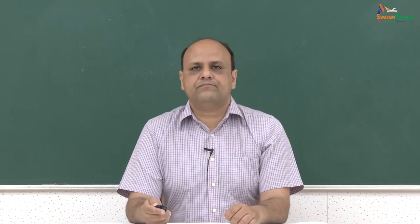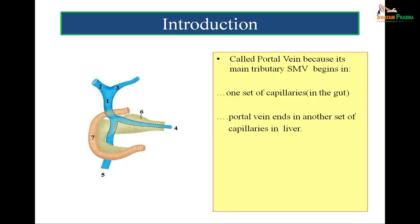Why is this portal vein called portal vein? It is called portal vein because the superior mesenteric vein which forms it begins in one set of capillaries in the abdomen, and the portal vein once formed ends in another set of capillaries in the liver. Such an arrangement wherein the beginning is by capillaries and the end is also by capillaries is referred to as the portal system. It is thus logical to call this vein the portal vein.